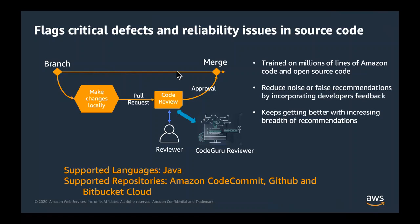CodeGuru Reviewer has been trained on millions of lines of Amazon code and open source code to find specific code patterns and kinds of issues that developers might make. One thing we've worked hard on is reducing noise and false positives — you don't want to wade through a haystack looking for a needle. Both machine learning and automated reasoning help reduce false positives so that recommendations are actionable. This improves with developer feedback, and the breadth of recommendations continues to grow. Today we support Java and Amazon CodeCommit, GitHub, GitHub Enterprise, and Bitbucket.